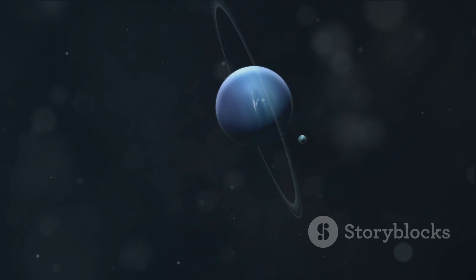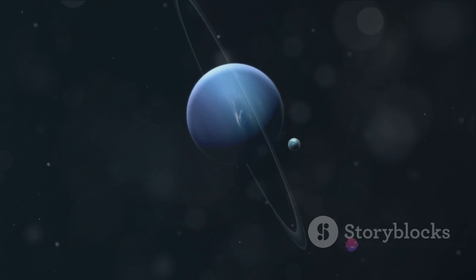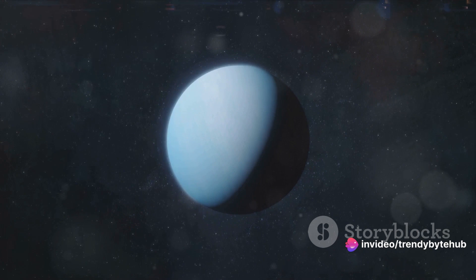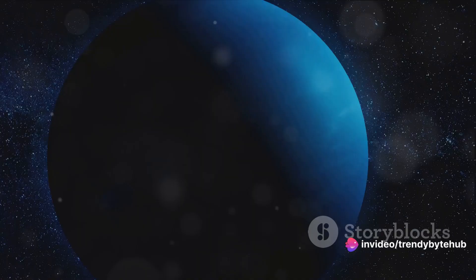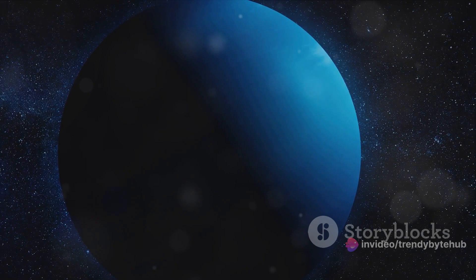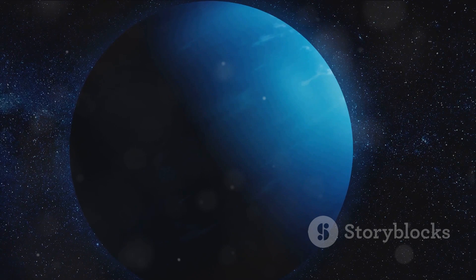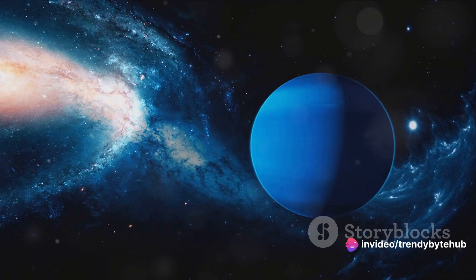However, these findings also raise new questions. For instance, how do these newly discovered moons fit into our understanding of the solar system's formation? What drives Neptune's extreme weather conditions? And what can they tell us about weather on other planets? And most intriguingly, if there is indeed diamond rain inside Neptune, what other wonders might be hidden within this blue giant? Our understanding of Neptune continues to evolve, as does our curiosity about this distant world. We're eager to uncover more of Neptune's secrets, and each new discovery brings us one step closer to understanding the mysteries of our universe.